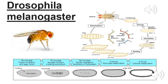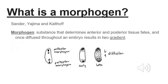Afterwards, various cell divisions occur, resulting in the formation of the syncytial blastoderm. Studies done by Sander, Ujima, and Kaltoff provided evidence of a patterning mechanism in Drosophila embryos.